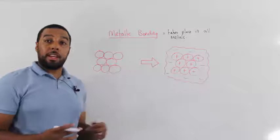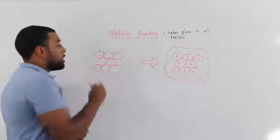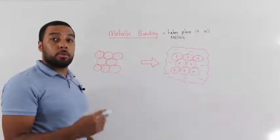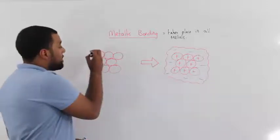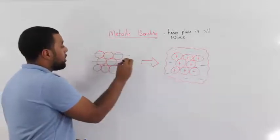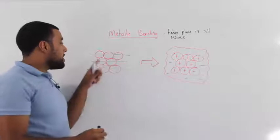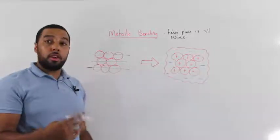If we were to look at a small section of a metal like this, you will see that the atoms within that metal have this nice regular arrangement. You can see that all the atoms are arranged in rows.